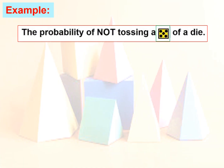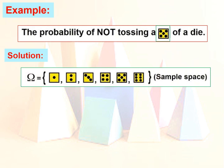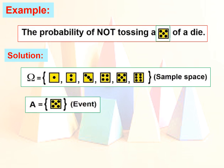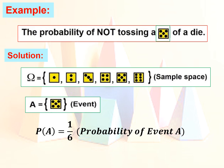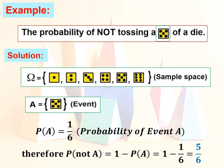Let us have example number 1: the probability of not tossing a 5 on a die. The sample space for tossing a die is 1, 2, 3, 4, 5, 6, and we know there is only one 5. So the probability of getting a 5, or P(A), is equal to 1 over 6. Therefore, P(not A) equals 1 minus 1 over 6, which is equal to 5 over 6.